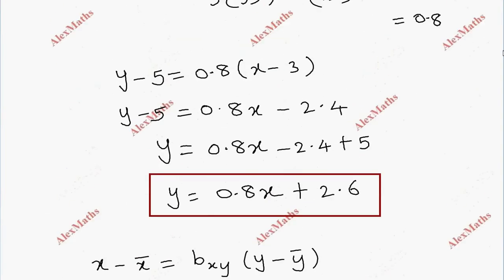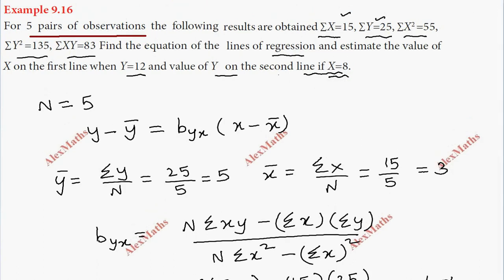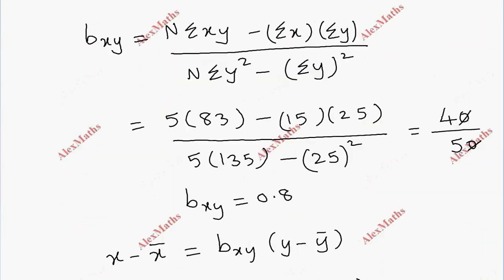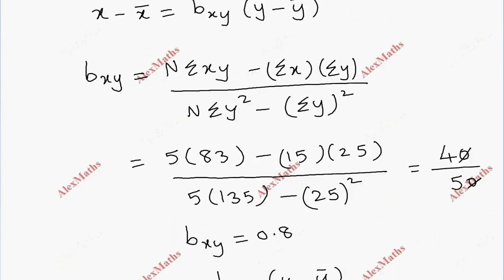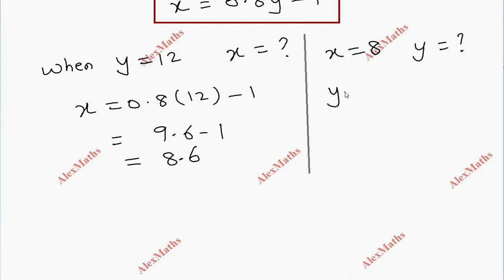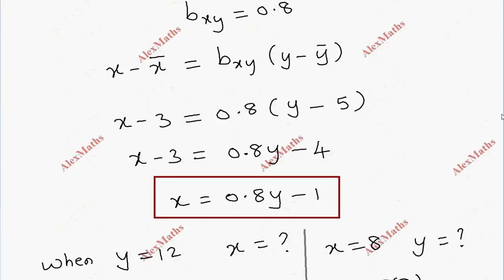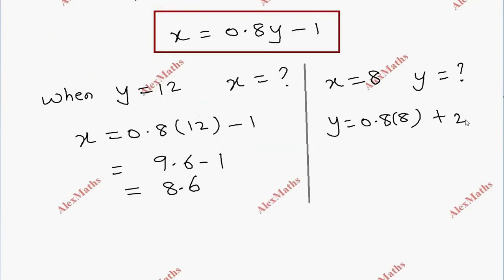Second, when x equals 8, find y. Using the regression line y on x: y equals 0.8 into 8 plus 2.6, which gives 6.4 plus 2.6, so y equals 9.0.